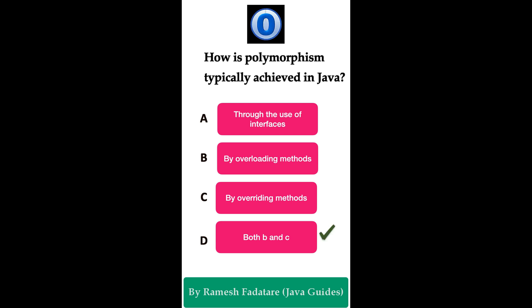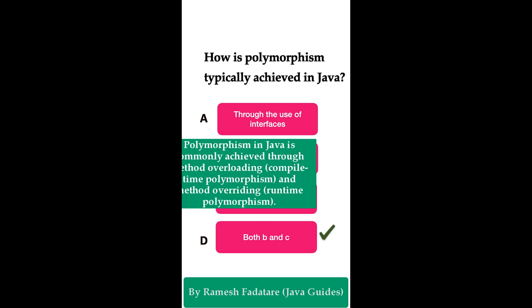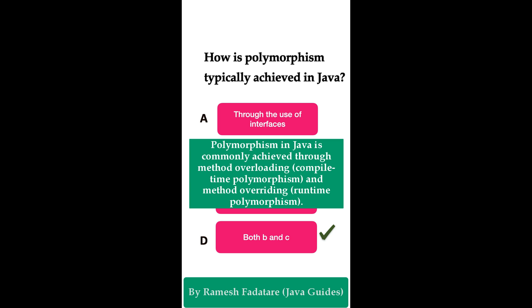The correct answer is option D: both B and C. Polymorphism in Java is commonly achieved through method overriding as well as method overloading. Method overloading is called compile-time polymorphism, and method overriding is called runtime polymorphism. So polymorphism is achieved through both method overloading and method overriding.